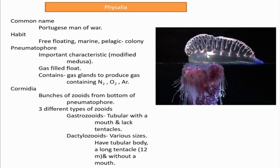The medusa structure has an umbrella shape — an exumbrella surface, a subumbrella surface, and a manubrium. So pneumatophore is a modified medusa, and it is a gas-filled float. This structure helps the colony to float in water through buoyancy. The gas is produced by certain glands inside the pneumatophore, and the common gases found inside are nitrogen, oxygen, and argon.